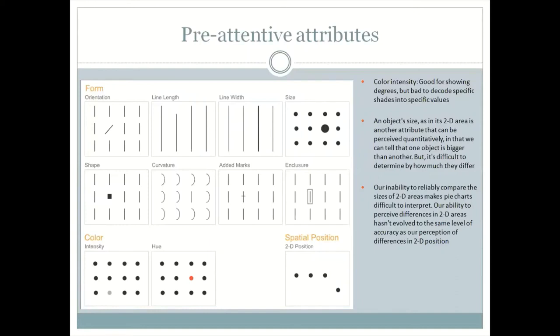All of these pre-attentive attributes stand out and make things stand out, but they have certain limitations in terms of the data types they work best with. For example, spatial position works wonderfully when you're dealing with hierarchy within an organization — if you want to show the organizational hierarchy or a family tree, it works splendidly.